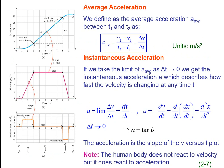Average acceleration is change in velocity divided by change in time. Instantaneous acceleration: make time tend to 0, it becomes dv/dt, the slope of the velocity-time graph. Acceleration is also expressed as dv/dt or d²x/dt², which is the double derivative of displacement with respect to time.